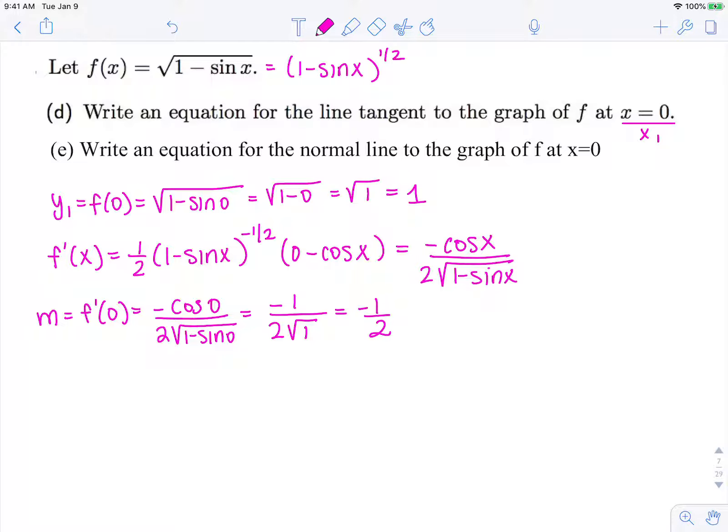So now that we have x1, y1, and m - we're still working on part d right now - y minus y1 equals m times x minus x1. So that's y minus 1 equals negative 1 half times x minus 0, and that is the equation of our tangent line.